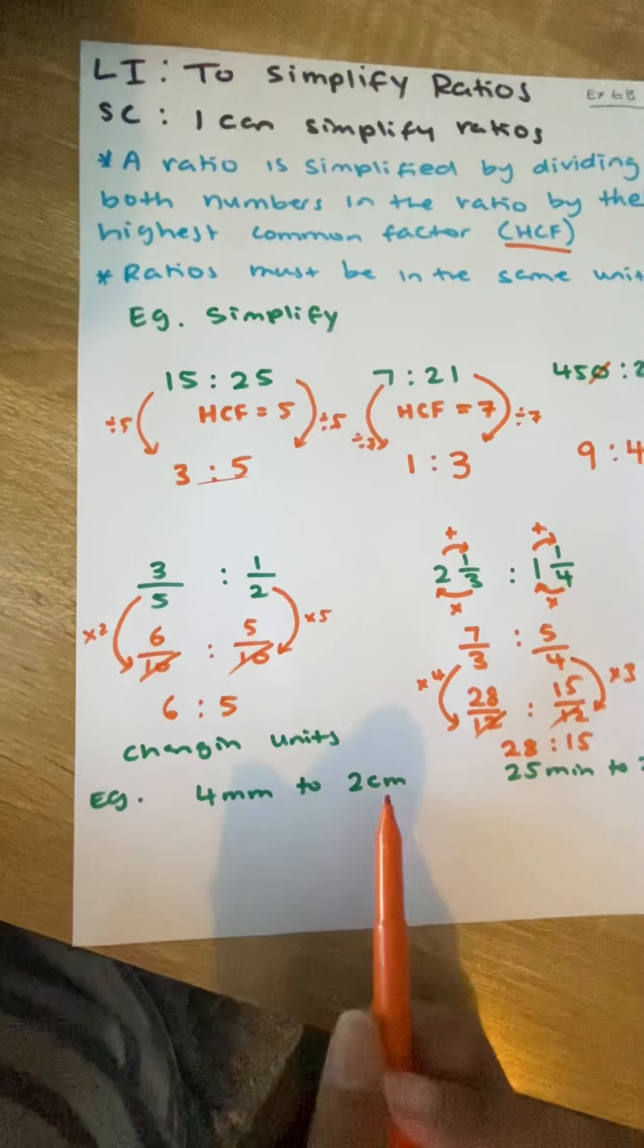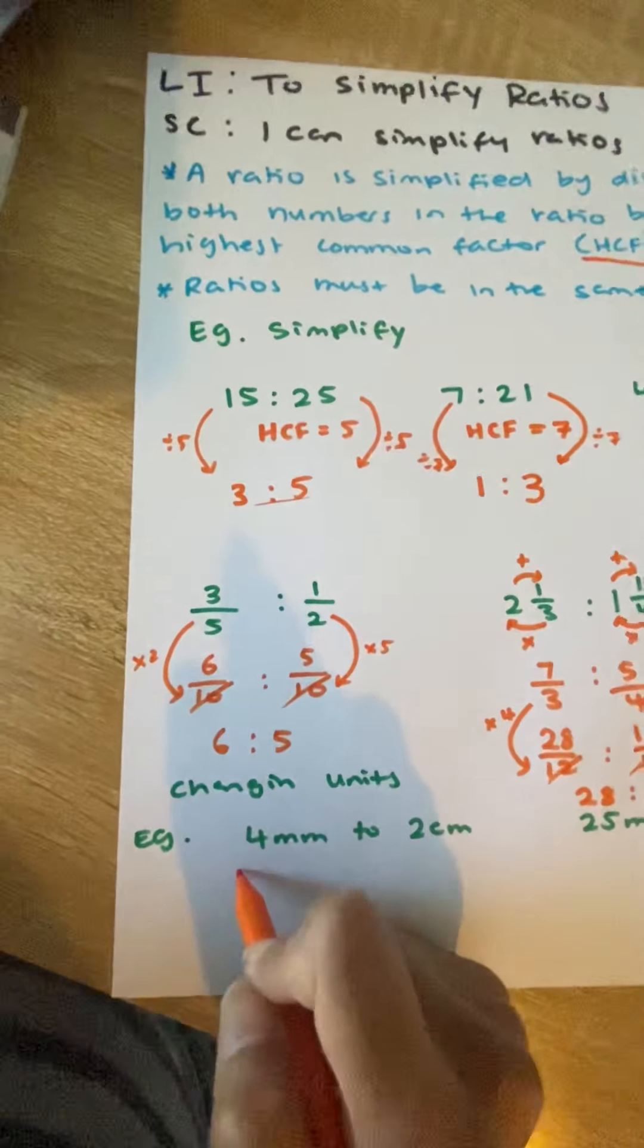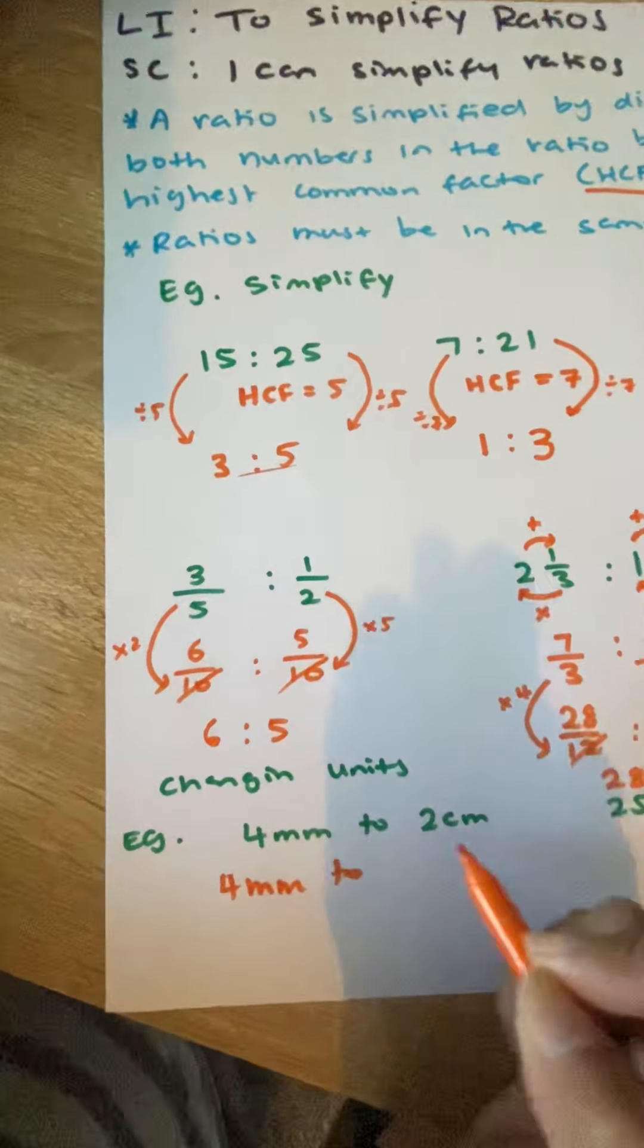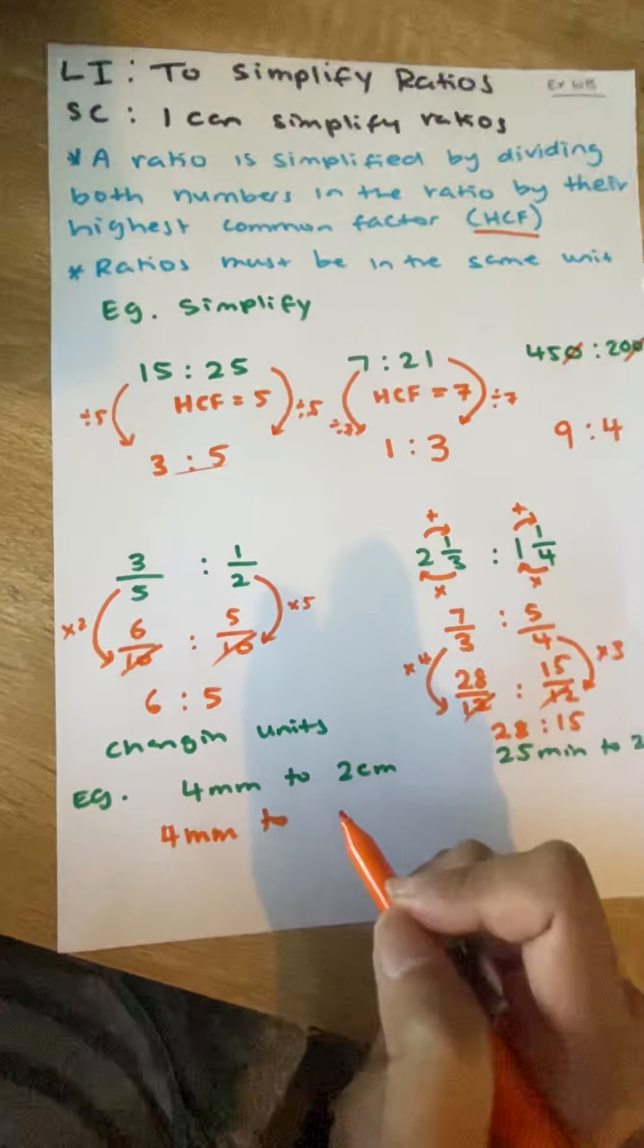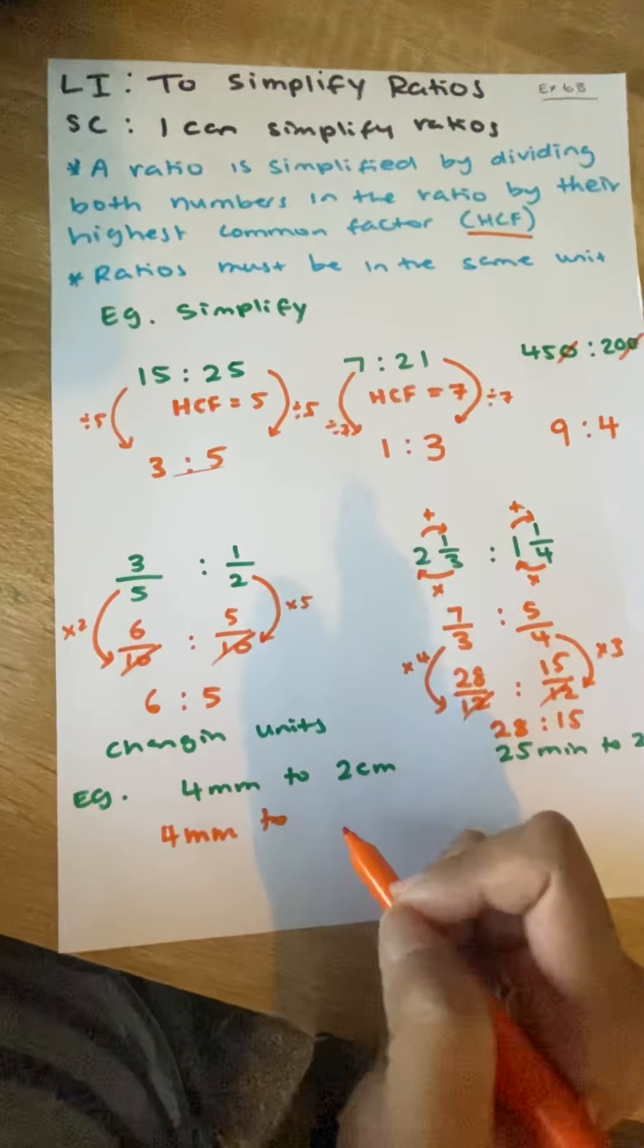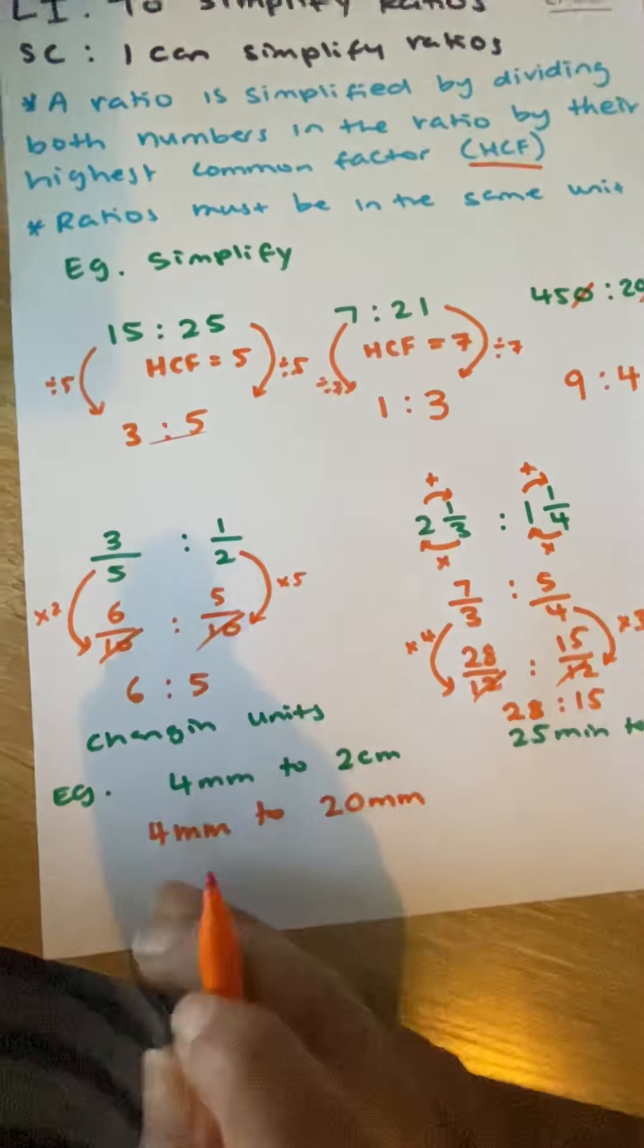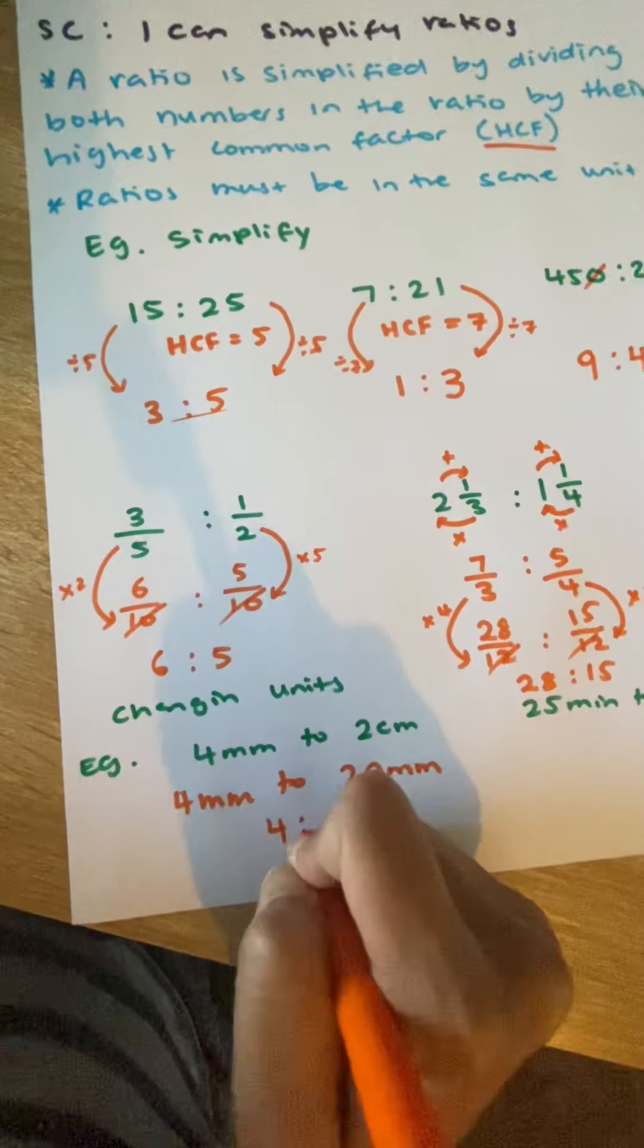So, what we're going to do is we're going to convert both of these into millimeters. So, we've already got 4 millimeters here. So, I'm going to keep that as 4 millimeters. But what's 2 centimeters? How do we convert centimeters to millimeters again? You might have to go back in your notes. To convert centimeters to millimeters, we times by 10. So, 2 times 10 is 20. So, that's going to be 20 millimeters. And now that both of our numbers are the same, I can write it as a ratio.